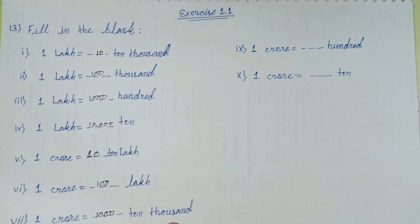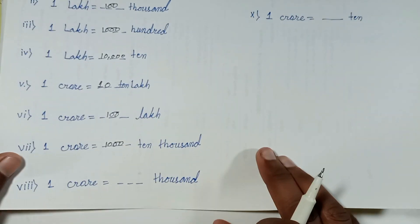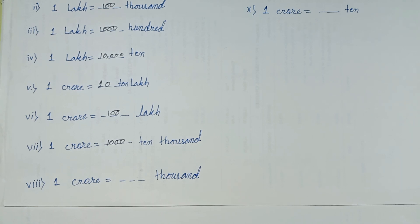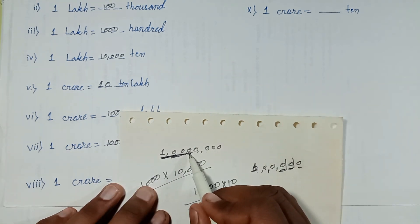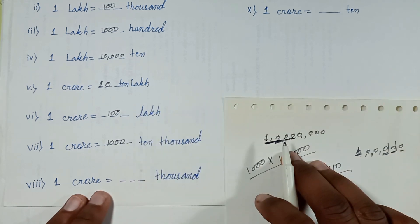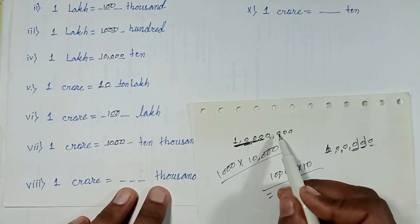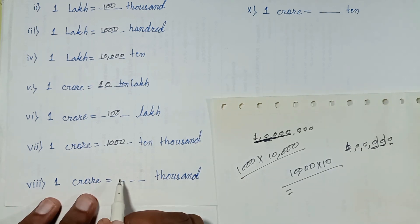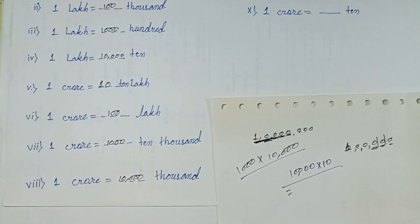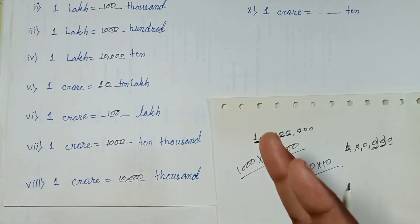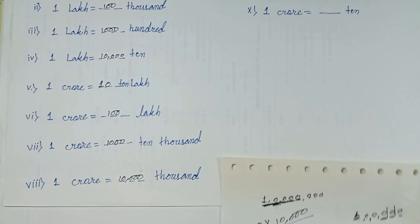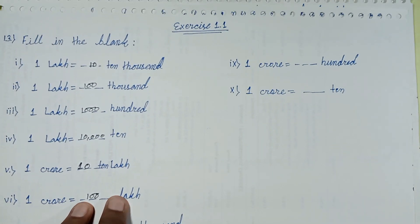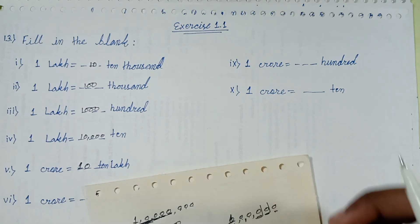Question number eight: one crore equals how many thousands? Ones, tens, hundreds, thousands, ten thousands, lakh, ten lakh, crore. In one crore, ten thousand times thousand times thousand equals one crore. Next, question number nine: one crore equals how many hundreds?